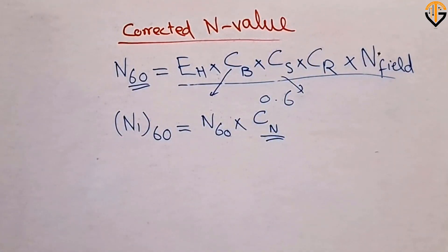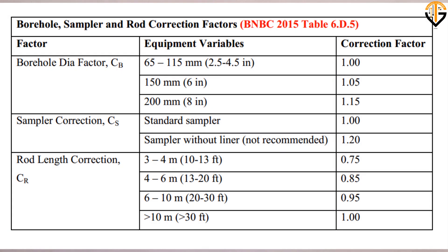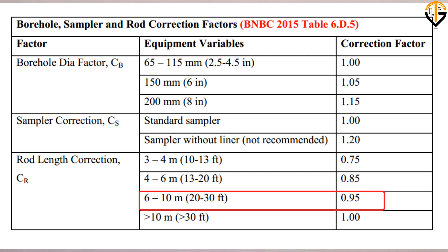You also need to apply the correction for rod length C_R. From the table, if the rod length is between 10 to 13 feet, the correction is 0.75. If it is 13 to 20 feet, the correction is 0.85. If the rod length is between 20 to 30 feet, the correction is 0.95. If the rod length is greater than 30 feet, no correction is required and you multiply by 1.